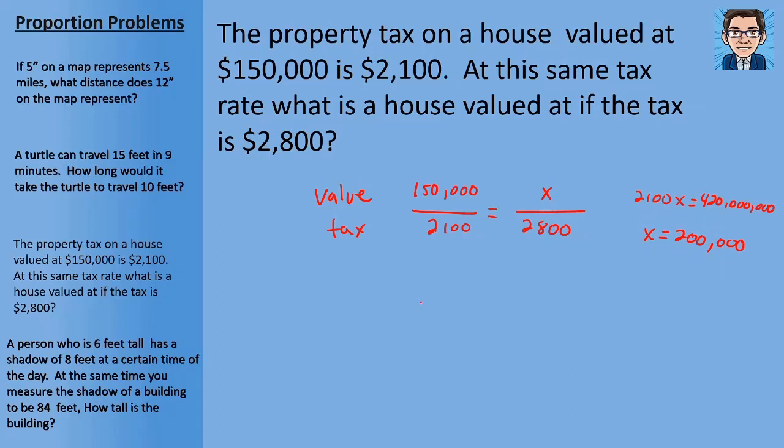Now let me show you a shortcut you could do here. So when you have a proportion, and only in proportion, only when they're set equal to each other, we can cancel or reduce in any of these directions. So you can reduce here, here, here, and here. So to make the math easier, we could have seen that both $2,100 and $2,800 are both divisible by $700. So we can actually reduce this into 3 and 4. Right? It just makes it a lot easier.